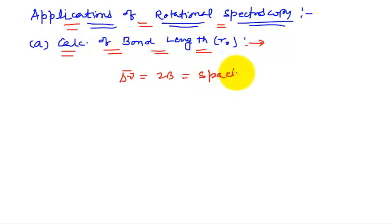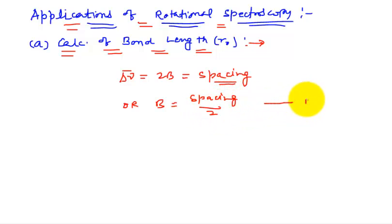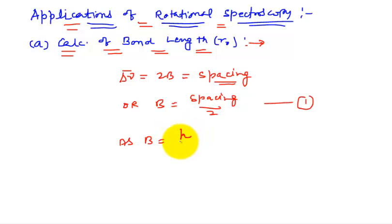Spacing means the energy difference between the consecutive spectral lines of the rotational spectra. From this data, the spacing will be observed from the rotational spectra. You place the value of spacing, and B can be calculated — B will be equal to spacing divided by 2. So here you have the B value. Also, B is equal to h upon 8π²Ic.